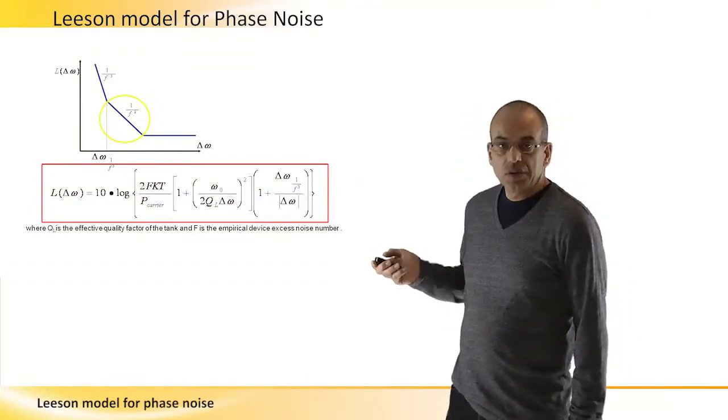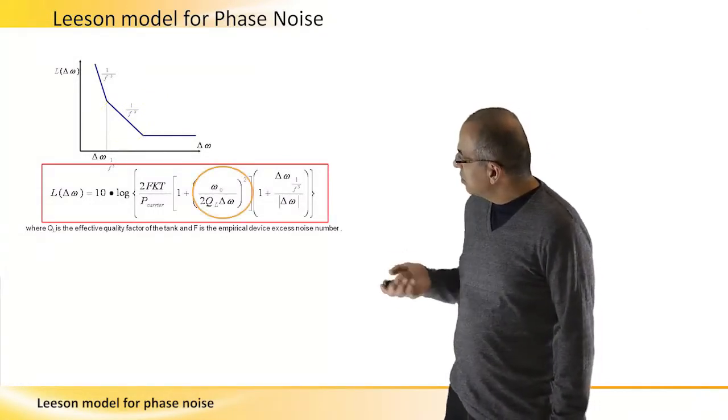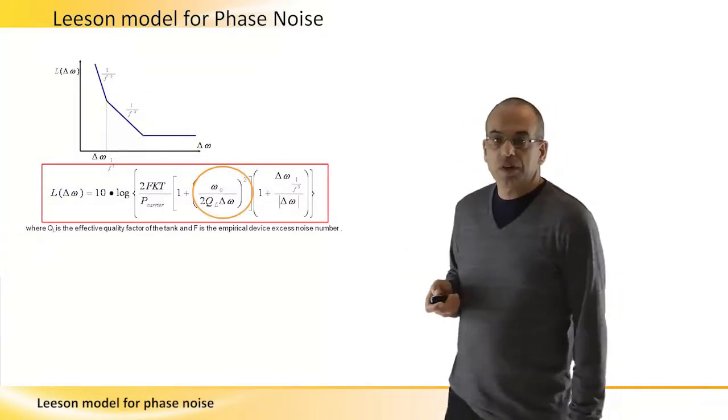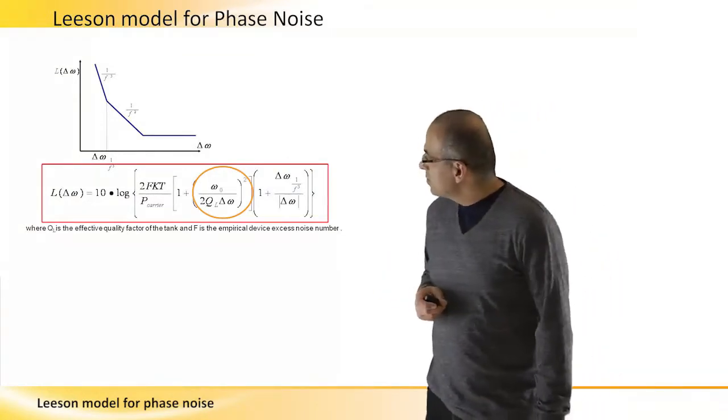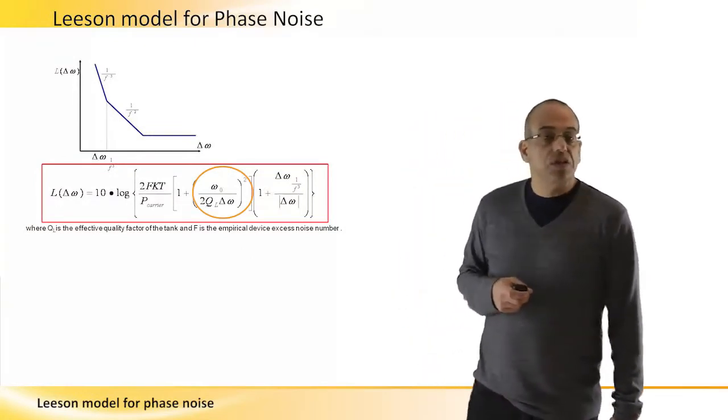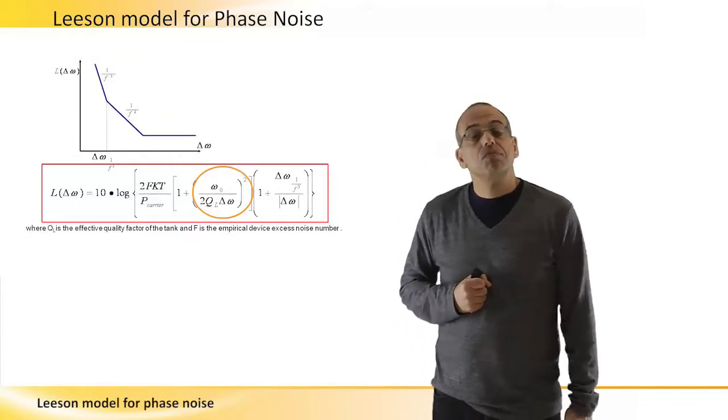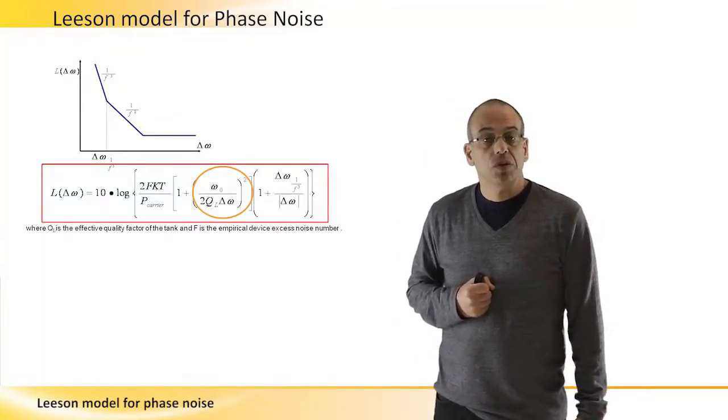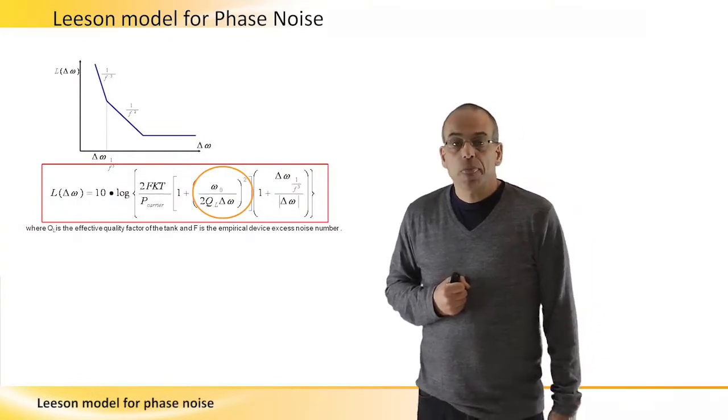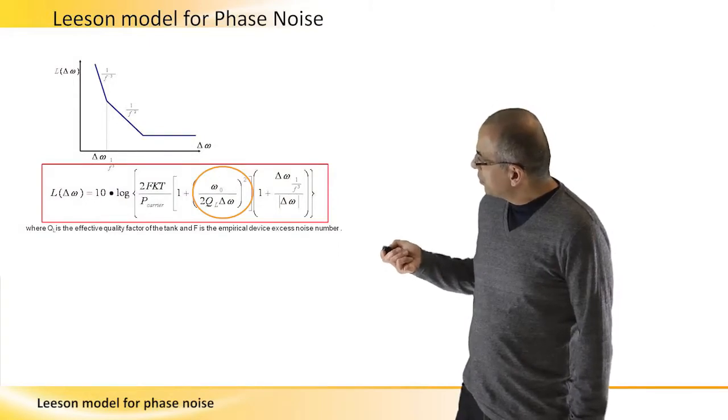What we can also see here is omega zero, which is the center frequency or frequency of oscillation, and QL that we see here is the quality factor of the inductor that was mentioned in the early beginning of this seminar inductor sessions.